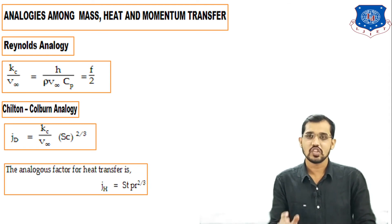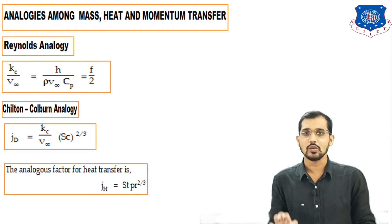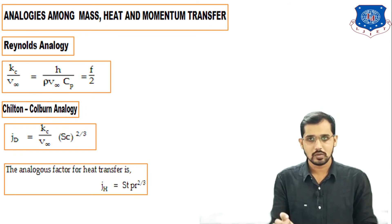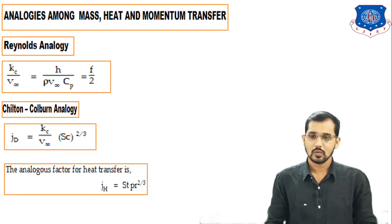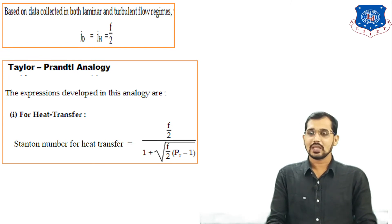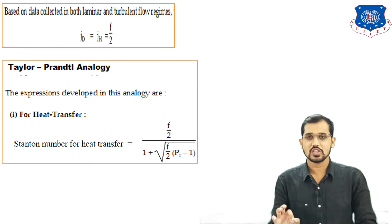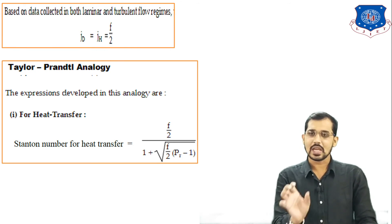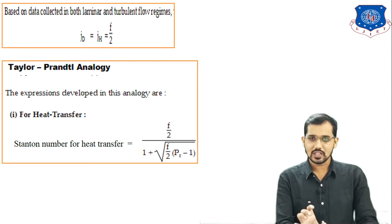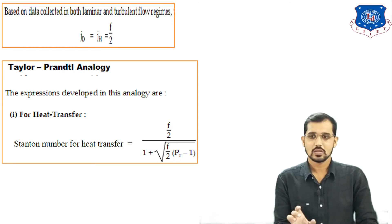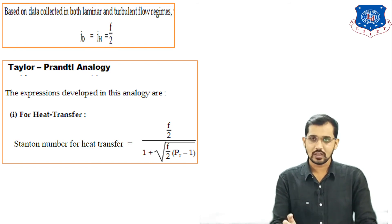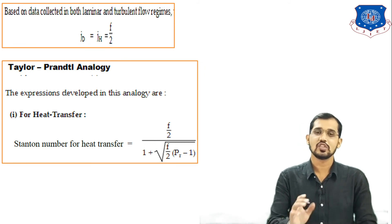Based on collected data in laminar and turbulent flow regimes, the experimental relation for the Chilton-Colburn analogy is: Jd = Jh = f/2. This represents the analogous behavior and relation between heat transfer and mass transfer for the J factors, where Jd is the J factor for diffusion or mass transfer, Jh is the J factor for heat transfer, and f is the friction factor.